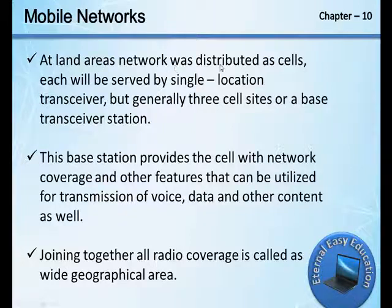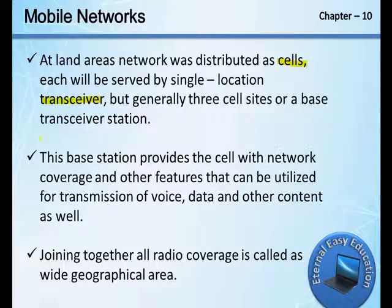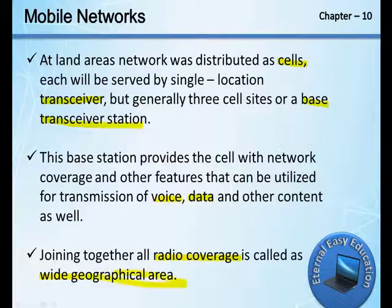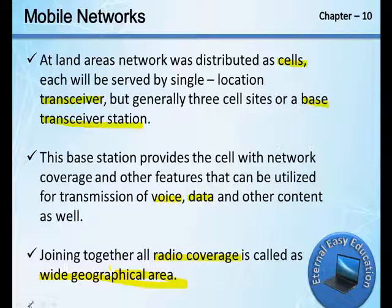At land areas, networks are distributed as cells, each served by a single local transceiver, but generally three cell sites share a base station. The base station provides the cell with network coverage and other features that can be utilized for transmission of voice, data, and other content. Joining together all radio coverage is called a wide geographical area. This is how calls are communicated from one person to another.